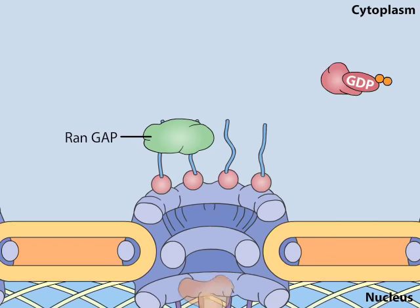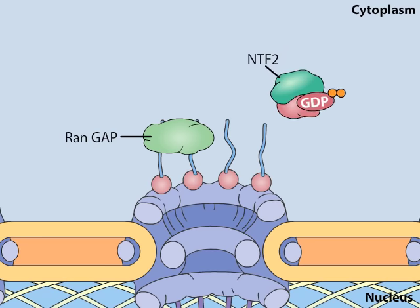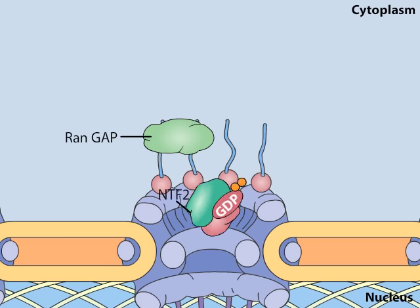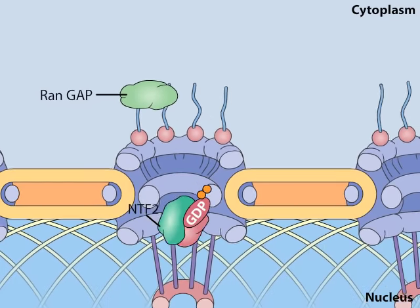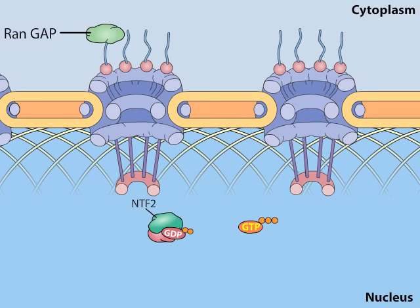In an action that prevents the depletion of RAN from the nucleus, the RAN-GDP formed in the cytoplasm is transported back to the nucleus by its own import receptor, a protein called NTF2.